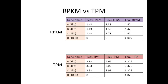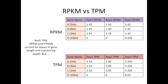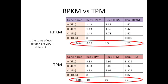Here's a comparison of the same original data sets scaled for RPKM and TPM. Above we have RPKM and below we have TPM. Both correct for biases in gene length and sequencing depth, but the sums of total normalized reads in each column are very different. With RPKM, we get a different total value for each sample. With TPM, we get the same value for each column.